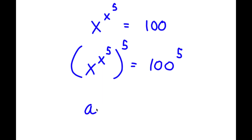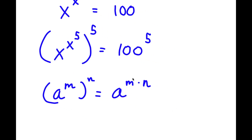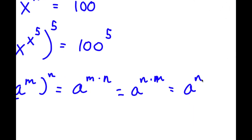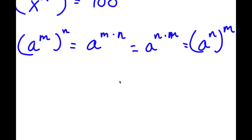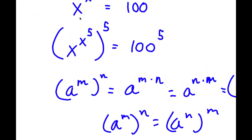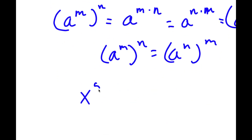Now, if I have something in the form a to the power of m to the power of n, this is the same thing as a to the power of m times n. And since m times n equals n times m, this also equals a to the power of n to the power of m. So I can rewrite x to the power of x to the power of 5 to the power of 5 — thinking of x to the power of 5 as m and 5 as n — and changing their places, I get x to the power of 5 to the power of x to the power of 5, equal to 100 to the power of 5.